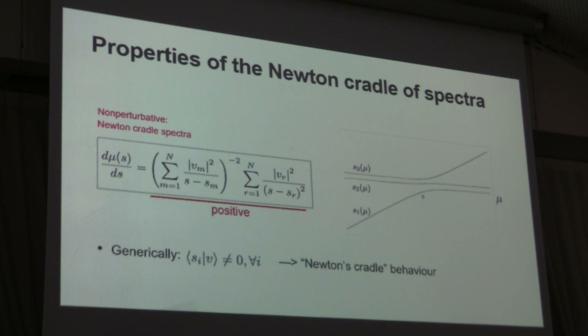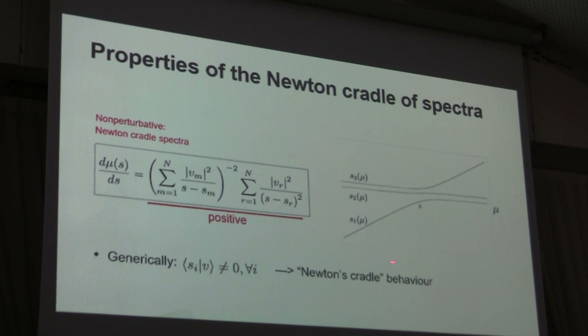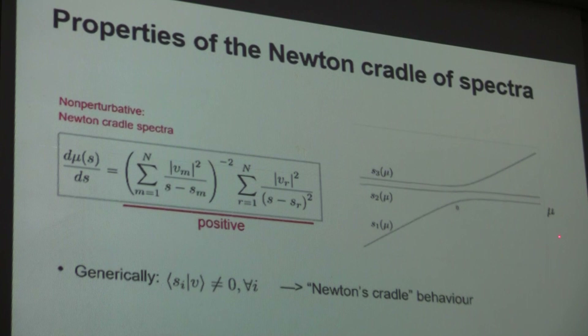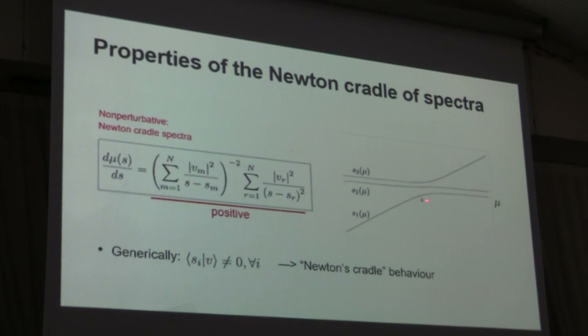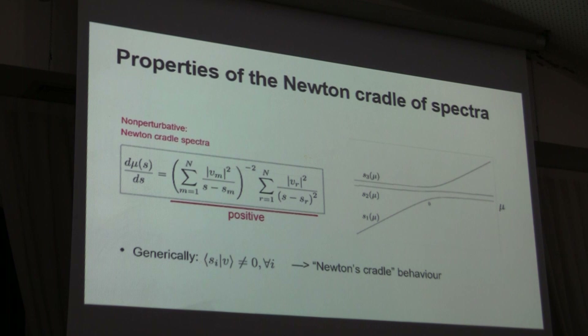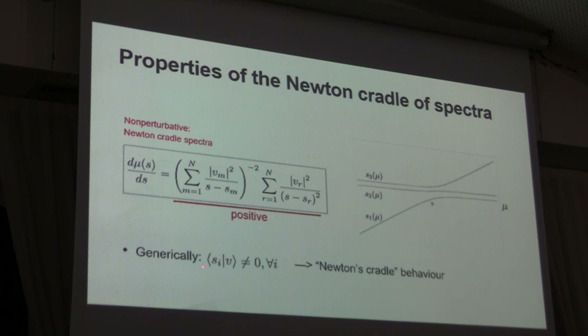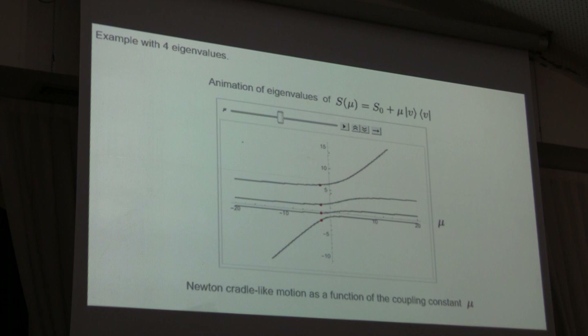What this shows is that generically, when we add a rank-one projector to a Hamiltonian, we get Newton's Cradle behavior of eigenvalues. As you change the coupling constant mu from minus infinity to plus infinity, the lowest eigenvalue shoots up from minus infinity, kicks the other eigenvalues at some finite value of mu, and then the largest eigenvalue picks up the momentum and shoots off to plus infinity. This is the generic behavior because generically the overlap between the projector and the eigenvector is non-zero. Here you'll see the animation of this behavior with four eigenvalues chosen randomly — you can see visually it reminds us of Newton's Cradle.